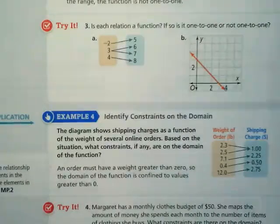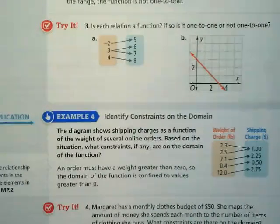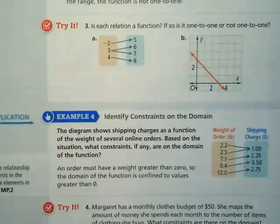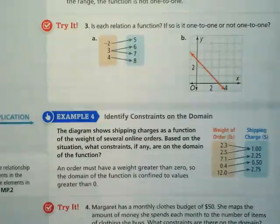What's a constraint here? Is there going to be a negative weight? Is there going to be a zero weight?